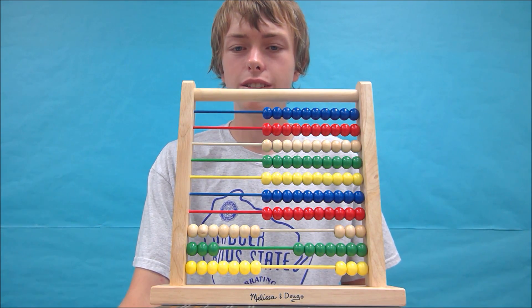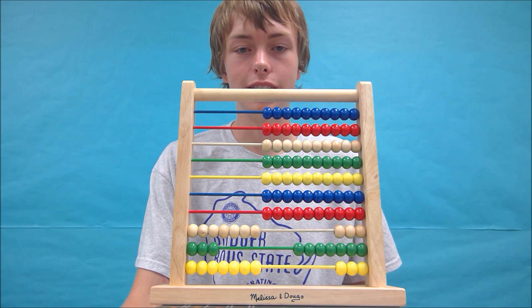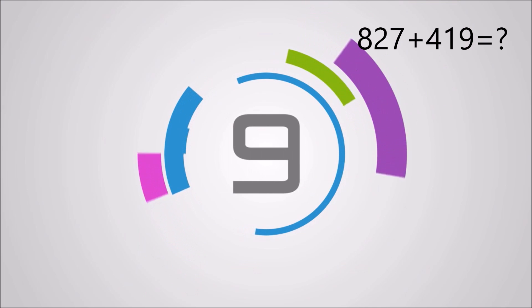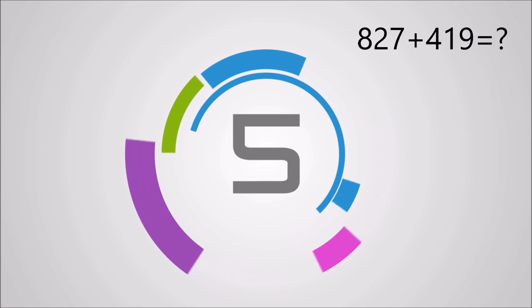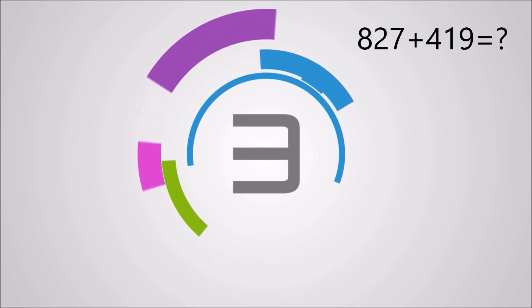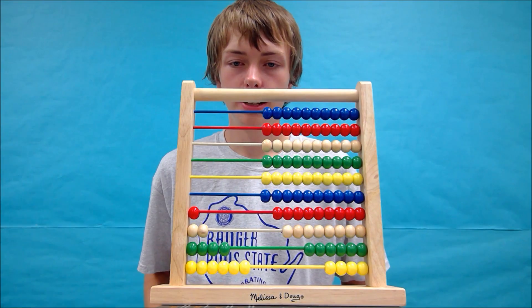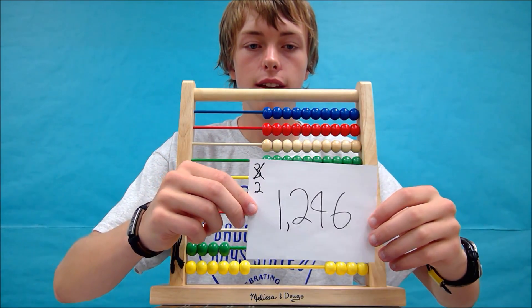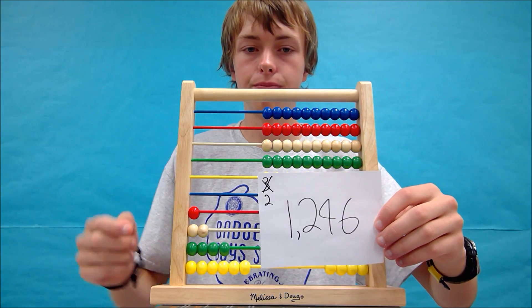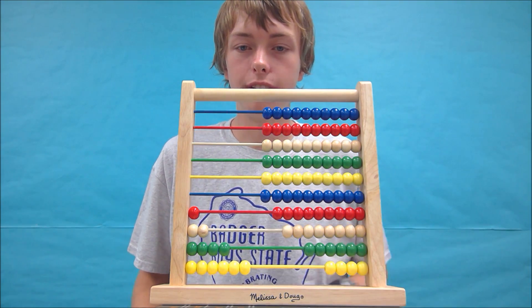Let's solve next 827 plus 419. The answer you should have gotten was 1246 and your abacus should look like this. These are my notes once again. Did you get it? Well done.